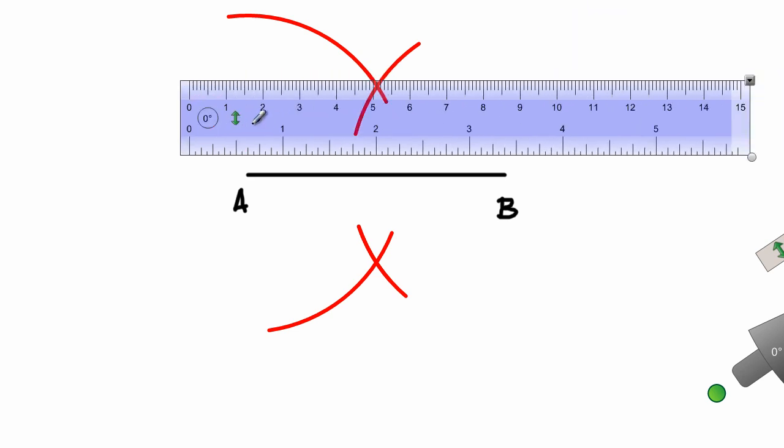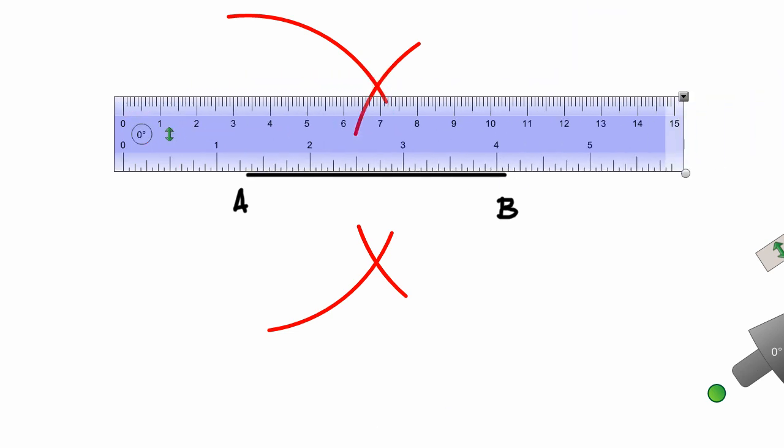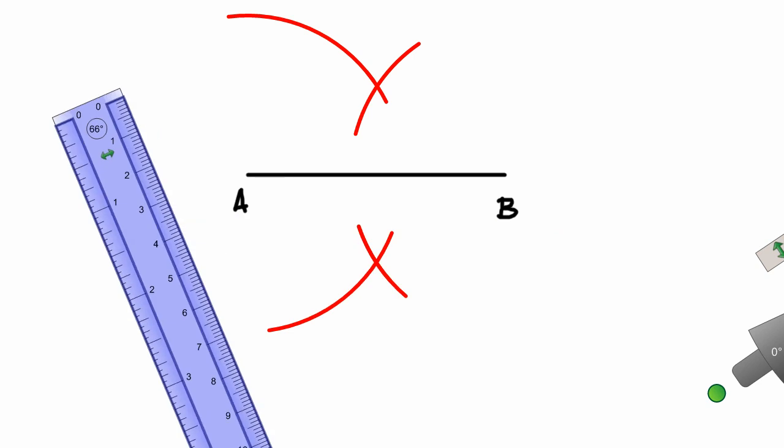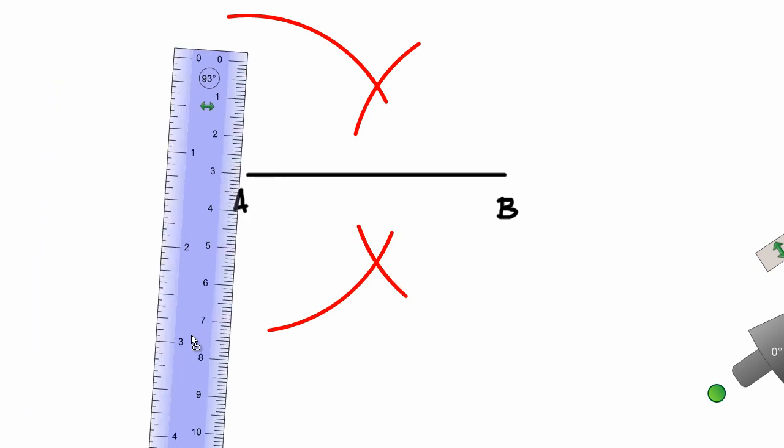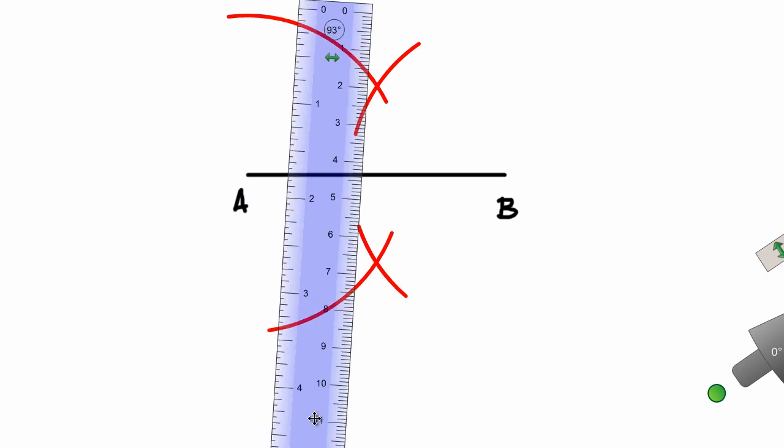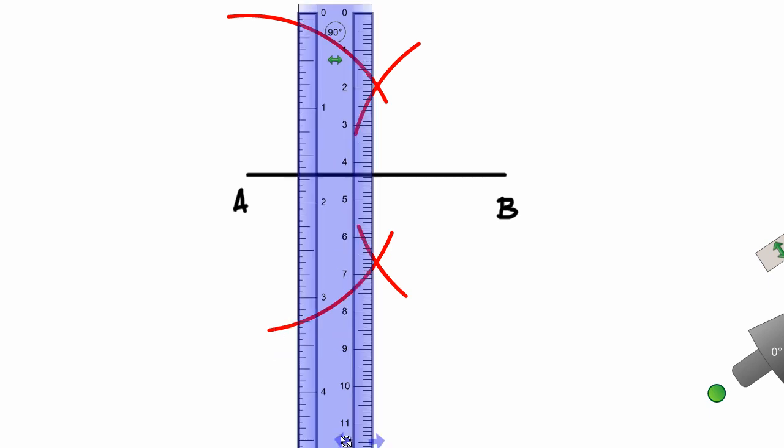So now I can put my compass aside. I'm going to use my ruler. I'm going to use my ruler and I'm going to draw a line straight through the point of intersections of the two arcs.